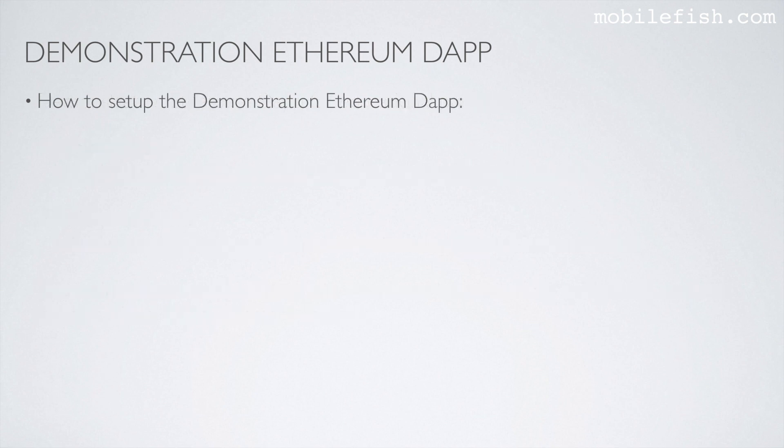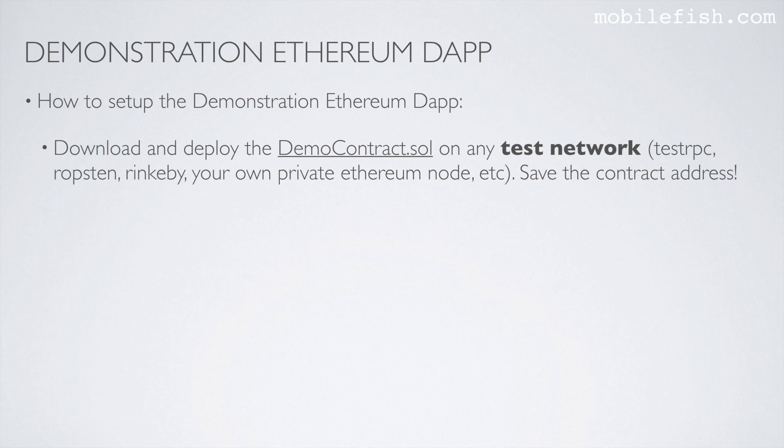How to set up the demonstration Ethereum dApp: download and deploy the demo contract Solidity file on any test network — for example, TestRPC, Ropsten, Rinkeby, or your own private Ethereum node. After you have deployed the contract, save your contract address — you will need it later.